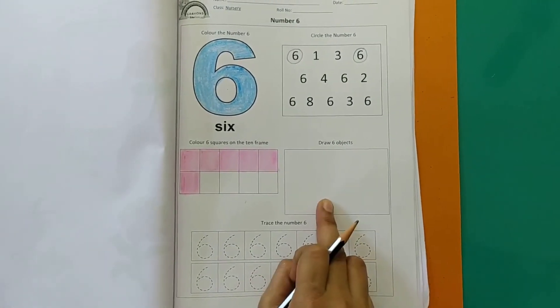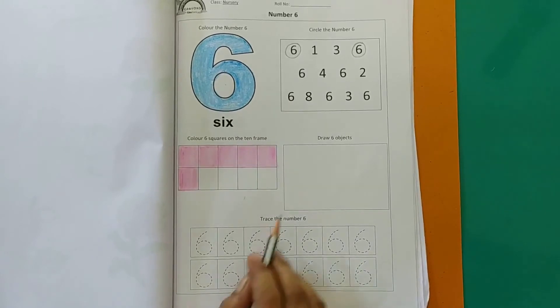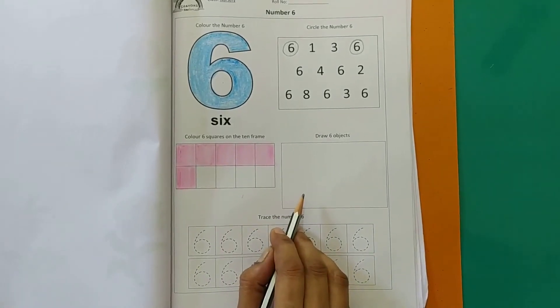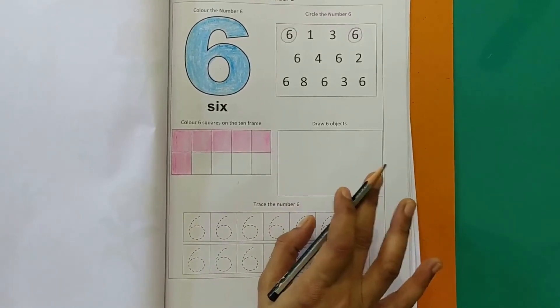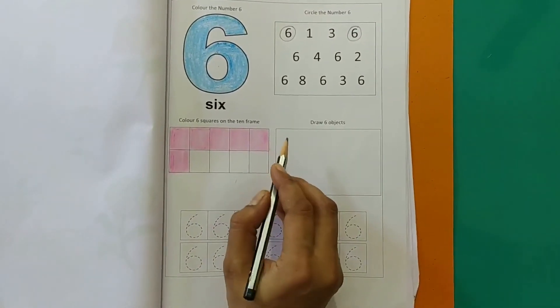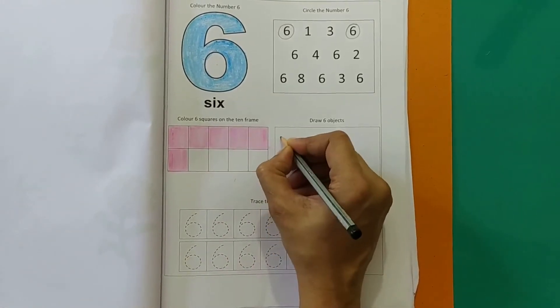The next activity is we have to draw 6 objects. We can draw either square, a triangle, a star. You can draw any object of your choice but it should be 6 in number. Okay. So let's make stars.